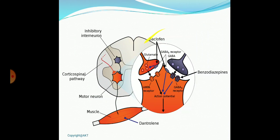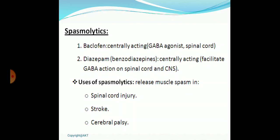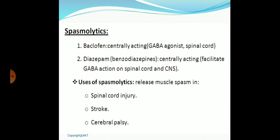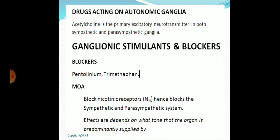Centrally acting skeletal muscle relaxants act at the level of the spinal cord and promote GABA-mediated inhibitory neurotransmission. Baclofen, diazepam, chlorzoxazone, and tizanidine all act by facilitating GABA-mediated inhibitory neurotransmission. They are used as spasmolytics to relieve muscle spasm associated with spinal cord injury, stroke, and cerebral palsy — note they are used to relieve muscle spasm associated with these conditions, not the conditions themselves.